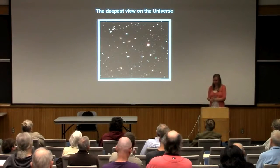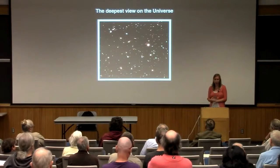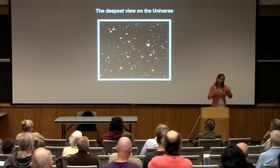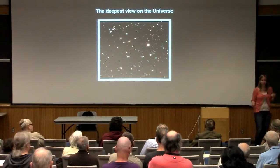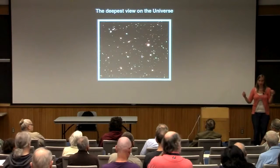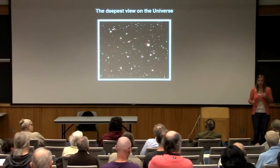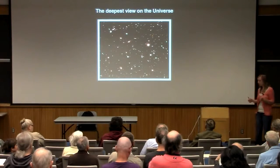What we're really interested in is how galaxies actually looked when the universe was much younger. By looking at galaxies from that earlier time, we can try to figure out how galaxies were actually formed — how spiral galaxies were formed, how elliptical galaxies were formed. That's what we want to know.